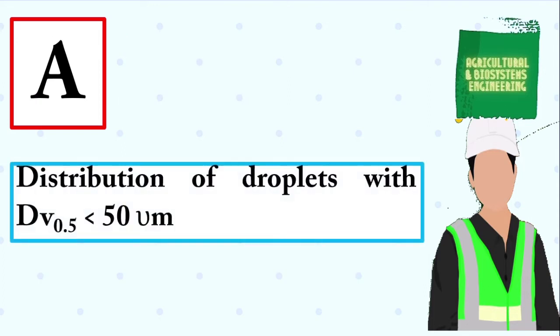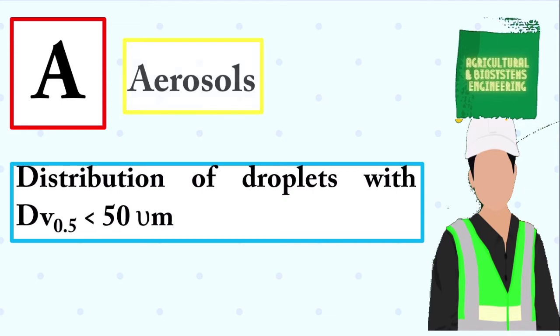Distribution of droplets with dV of 0.5 less than 50. The answer is: aerosols.